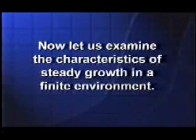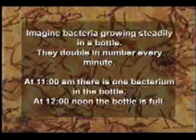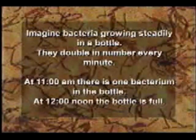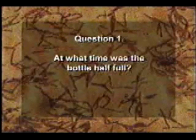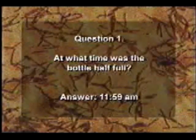Now let's look at what happens when we have this kind of steady growth in a finite environment. Bacteria grow by doubling — one bacterium divides to become two, the two divide to become four, the four become 8, 16, and so on. Suppose we have bacteria that double in number every minute. Suppose we put one of these bacteria in an empty bottle at 11 in the morning and observe that the bottle is full at 12 noon. That's ordinary steady growth with a doubling time of one minute in the finite environment of one bottle. At what time was the bottle half full? Would you believe 11:59 — one minute before 12 — because they double in number every minute.